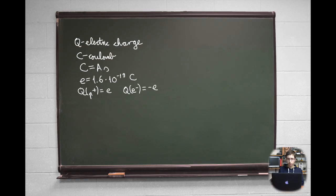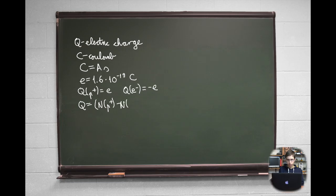How do we calculate the electric charge of a charged object if we know the number of protons and electrons in it? We calculate the difference between these two numbers to get how many more or fewer protons there are than electrons, then multiply that value by the elementary charge e, since the total charge of an object must be a multiple of e. So the formula is: Q equals number of protons minus number of electrons, times elementary charge e. From this we can conclude if an object is positively charged, negatively charged, or electrically neutral.